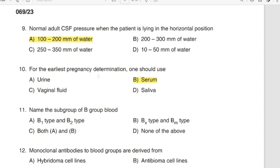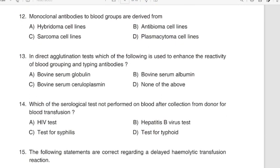Question 11: Name the subgroups of the B blood group. Correct answer: Option B — BX type and BM type. Question 12: Monoclonal antibodies to blood groups are derived from. Correct answer: Option A — Hybridoma cell lines.